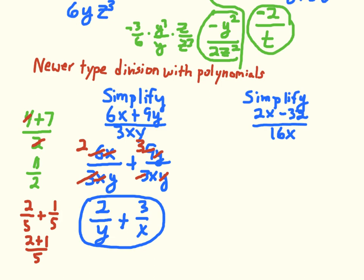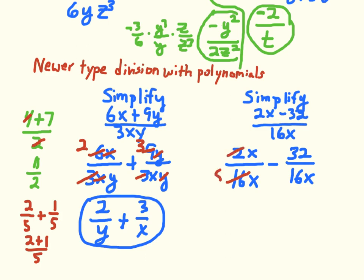For 2x minus 32 divided by 16x, we separate it into 2x over 16x minus 32 over 16x. In the first fraction, there's a factor of 2 in 2 and 16 — that gives an 8 — and the x's cancel, leaving 1 eighth. For the second fraction, 16 is a common factor of 32 and 16, leaving a 2, with an x remaining in the denominator. So the result is 1 eighth minus 2 over x.